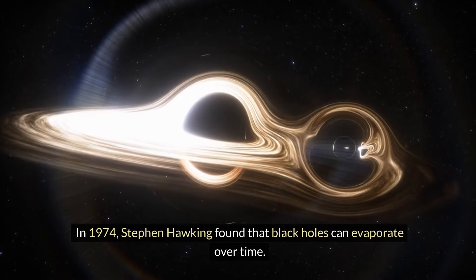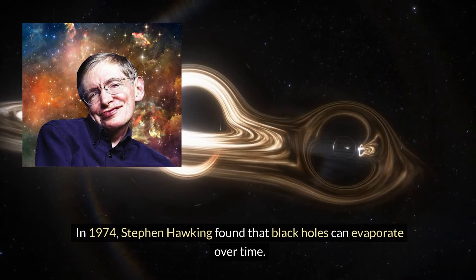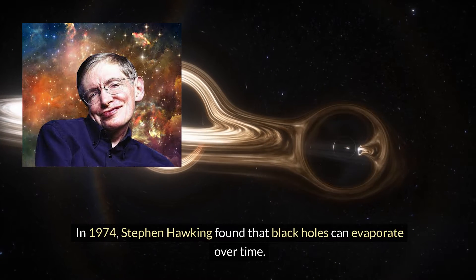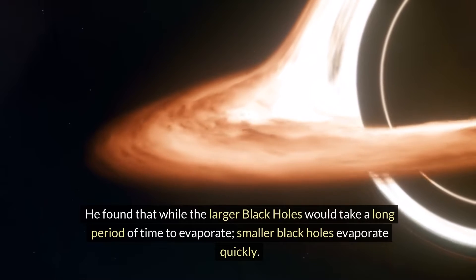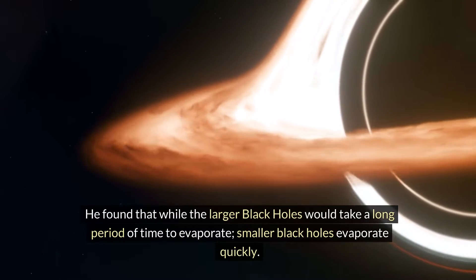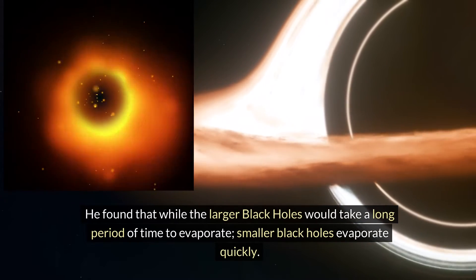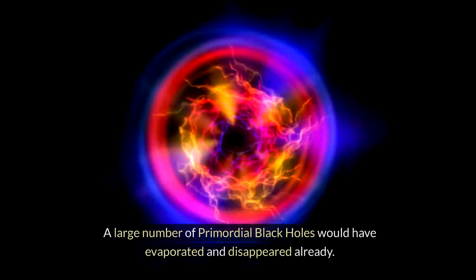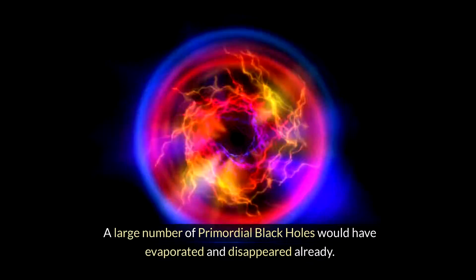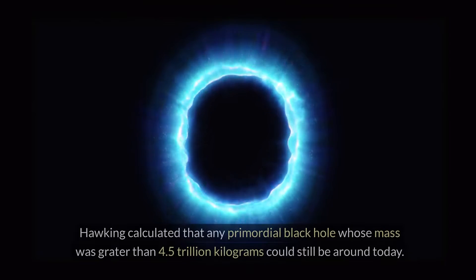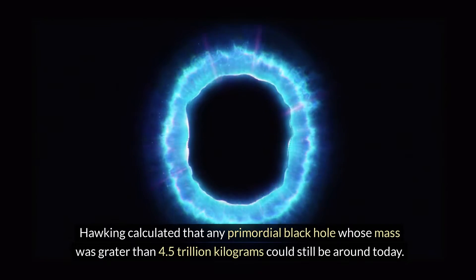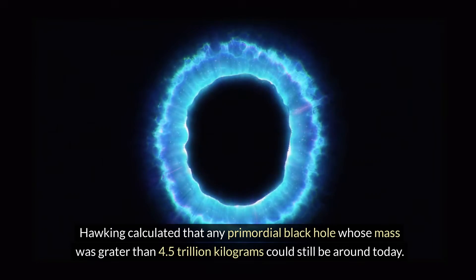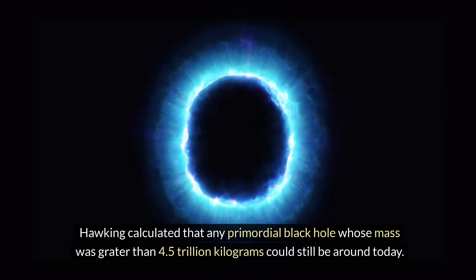In 1974, Stephen Hawking found that black holes can evaporate over time. He found that while the larger black holes would take a long period of time to evaporate, smaller black holes evaporate quickly. A large number of primordial black holes would have evaporated and disappeared already. Hawking calculated that any primordial black hole whose mass was greater than 4.5 trillion kilograms could still be around today.